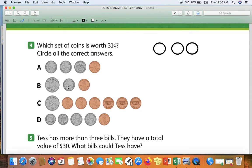Quarter, nickel, penny. I know that a quarter has a value of twenty-five. Twenty-five plus five makes thirty. Plus one more makes thirty-one. We do have a set of coins with a value of thirty-one, so we're going to circle it.